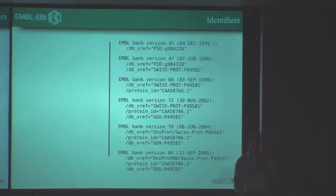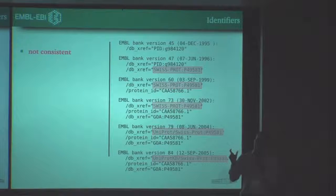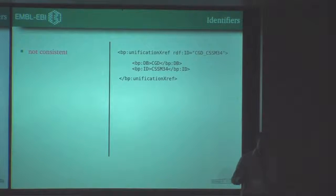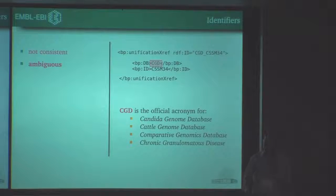Initially, some time ago, people decided to use some kind of free text. There were issues — it was not consistent, and different identifiers were used to represent the same thing, so that was not suitable. After that, we moved on to more structured formats, but in this case the approach used was ambiguous — the same identifier could actually represent several very different things.